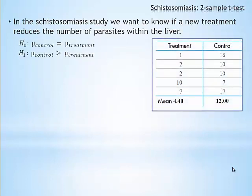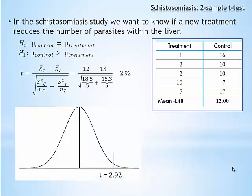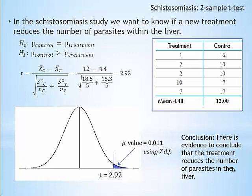We would then conduct the study and use the sample statistics from our study to calculate a test statistic, and then use a statistical table or software to calculate a p-value. In essence, we are comparing our test statistic from our study to a theoretical distribution. In this example, we are trying to determine how likely it is to observe a value greater than or equal to 2.92. Here we see that we observe a p-value of .011, meaning that the probability of observing 2.92 or greater is about 1.1%. So in this example, we conclude that the treatment does reduce the number of parasites in the liver.